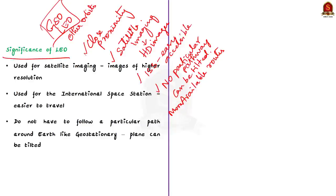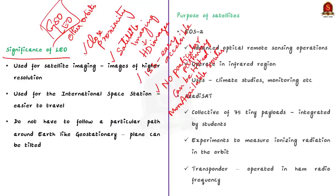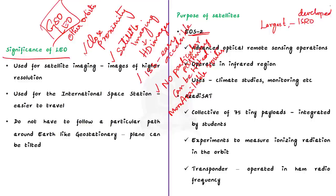Now coming back to the purpose of the satellites. First, the Earth Observation Satellite EOS-2 is the largest one, designed and developed by ISRO. It offered advanced optical remote sensing operations. If placed correctly in orbit, it would have operated in the infrared region, serving purposes from imaging for climate studies to keeping an eye on Earth.